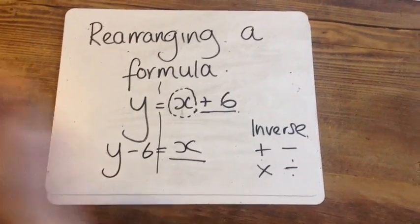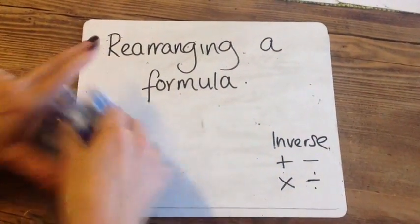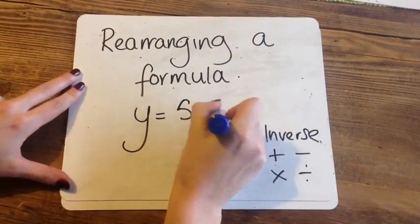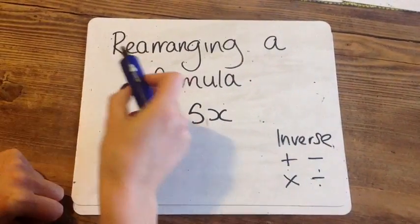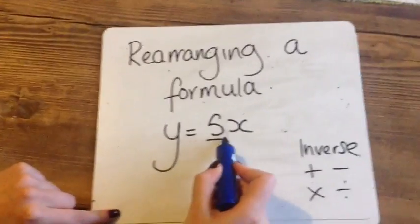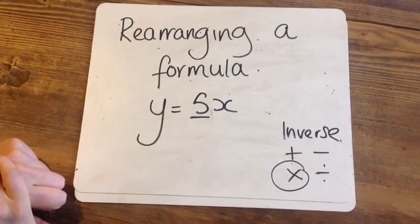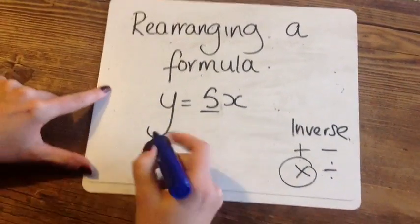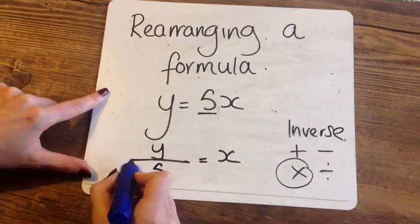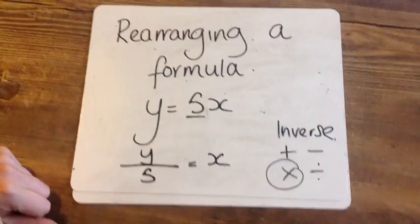Let me show you a different one. Y equals 5X. I want to rearrange the formula. Currently, this 5 is timesing the X. So when I move it to the other side, it's going to become a divide. And you've finished.